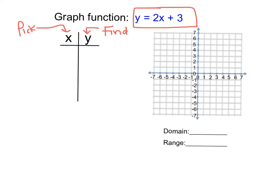Since we can pick whatever values for x that we want, I tend to stay right here around the y-axis. I like to pick the values that are in the middle of the table. So I pick values like x equals negative 2, negative 1, 0, 1, and 2. And all we're going to do is substitute values in for x and find the y value that corresponds with them.